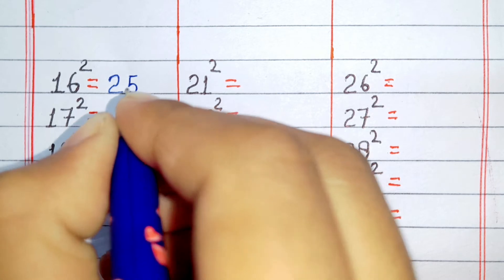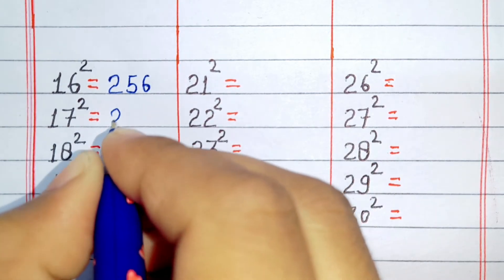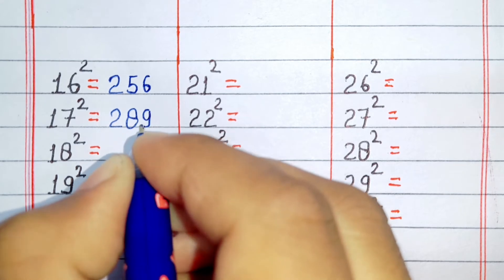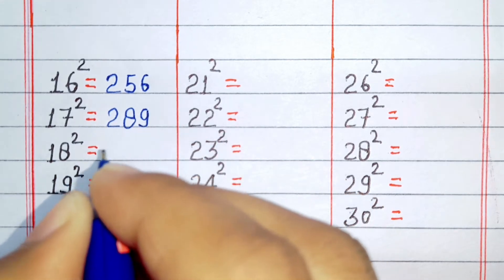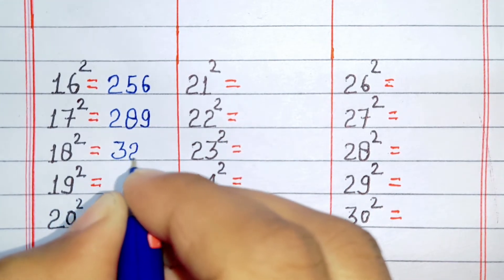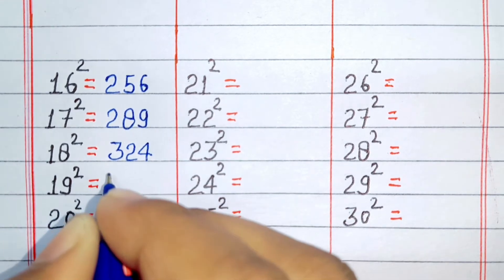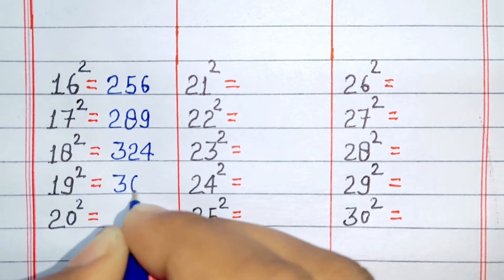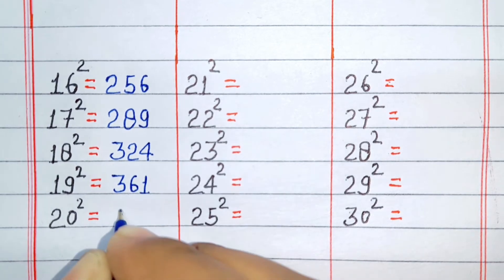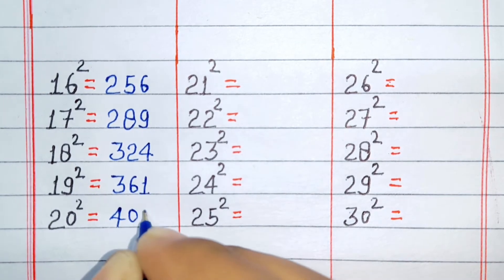Square of 16 is 256. Square of 17 is 289. Square of 18 is 324. Square of 19 is 361. Square of 20 is 400.